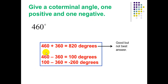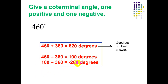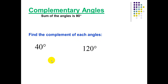When the angle is greater than 360°, subtract first: 460 minus 360 equals 100, so 100° is equivalent to 460°. Then take 100 and subtract 360: 100 minus 360 equals negative 260. The two coterminal angles are 100° and negative 260°. Now, complementary angles: the sum of two complementary angles is 90°.